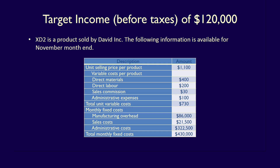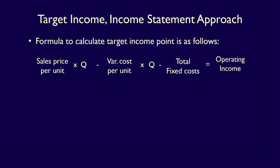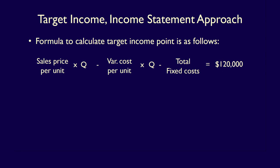How many units does the company have to sell in order to earn a target before-tax income of $120,000? The formula for operating income is: sales price per unit multiplied by Q, minus variable cost per unit multiplied by Q, minus total fixed costs, equals operating income — where Q equals the number of units sold. We use the exact same formula, simply replacing operating income with the target operating income of $120,000.